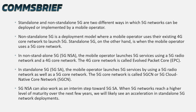Standalone and non-standalone 5G are two different ways in which 5G networks can be deployed or implemented by a mobile operator. Non-standalone 5G is a deployment model where a mobile operator uses their existing 4G core network to launch 5G. Standalone 5G, on the other hand, is when the mobile operator uses a 5G core network. In non-standalone 5G (5G NSA), the mobile operator launches 5G services using a 5G radio network and a 4G core network. The 4G core network is called Evolved Packet Core or EPC, and the 5G core network is called 5G-CN or 5G cloud-native core network.